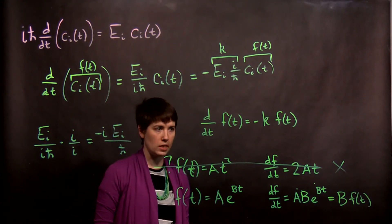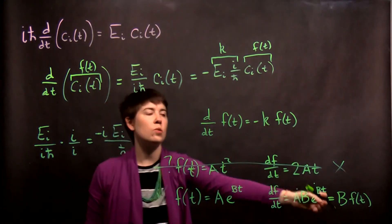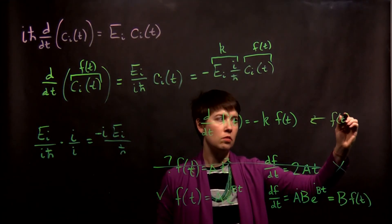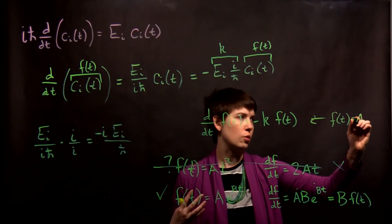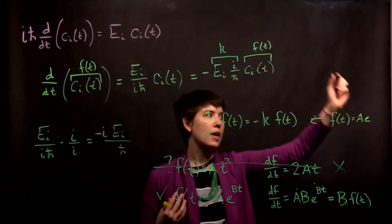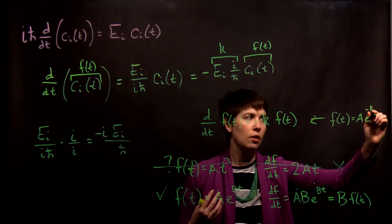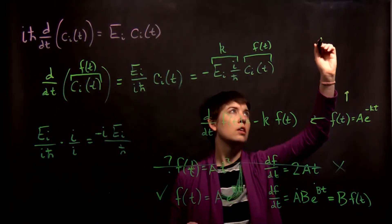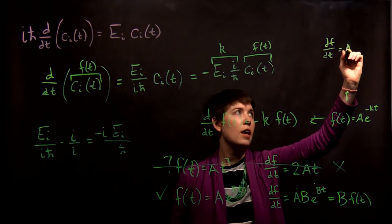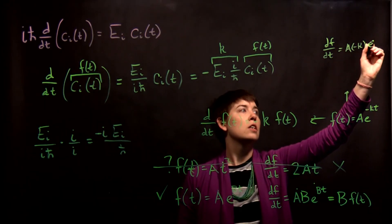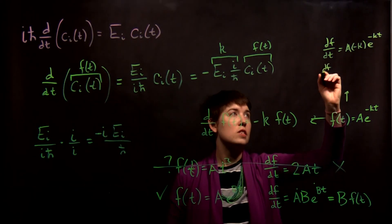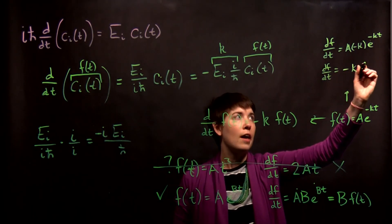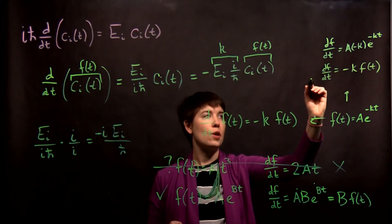We have to be a little bit cautious about exactly how we write it, and we need a specific value of b. What this means is that what solves this is f(t) equals some coefficient A — we don't know what that is — times e^(-kt) up in the exponent. We can check that: d/dt of f gives A, negative k comes down, so we get negative k·e^(-kt). Identifying A·e^(-kt) as f, this is negative k·f(t). So that is now proof that this works, and we have identified the functional form that these c values have.